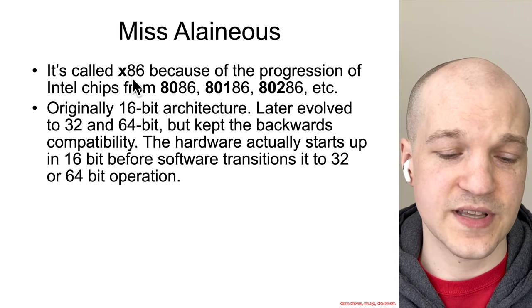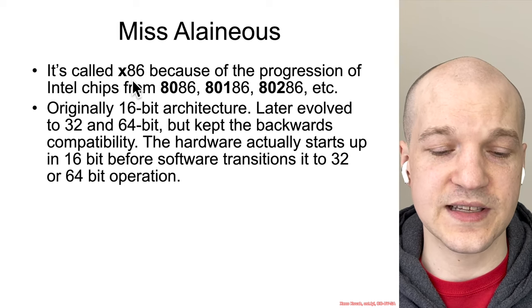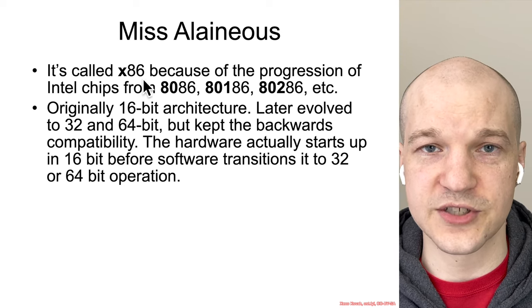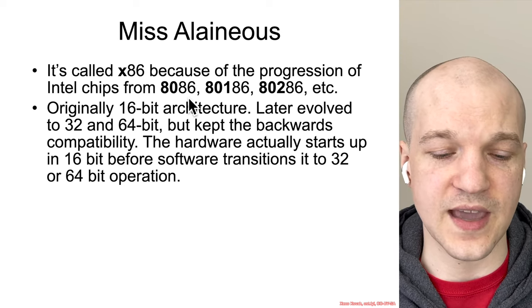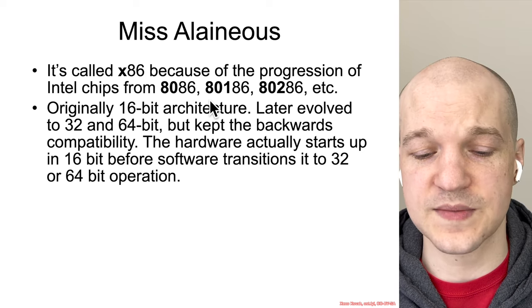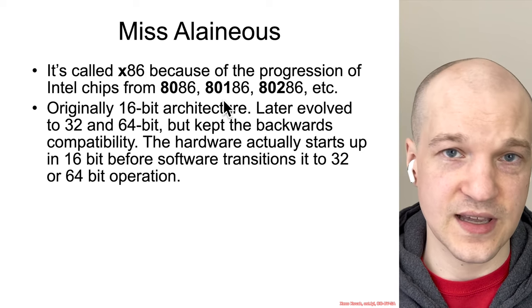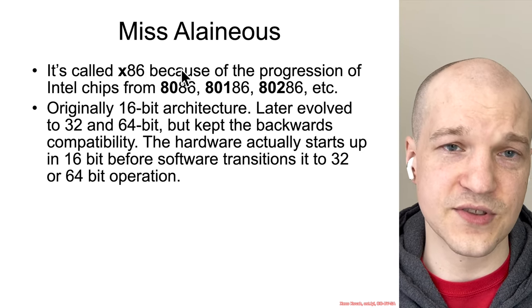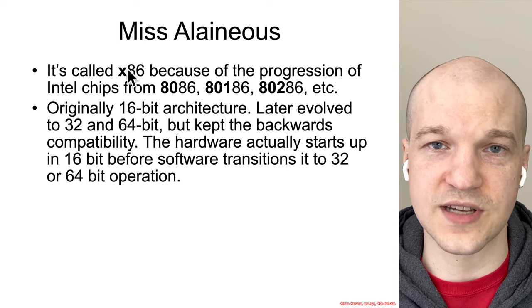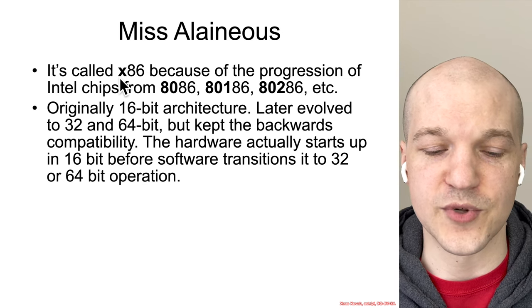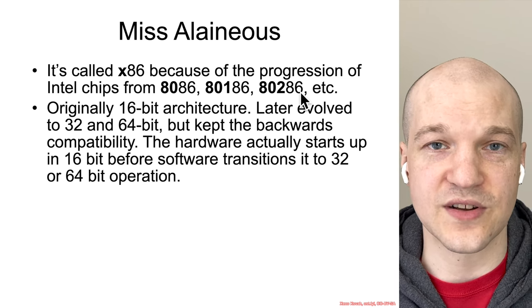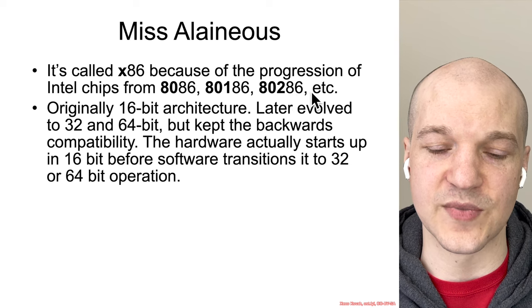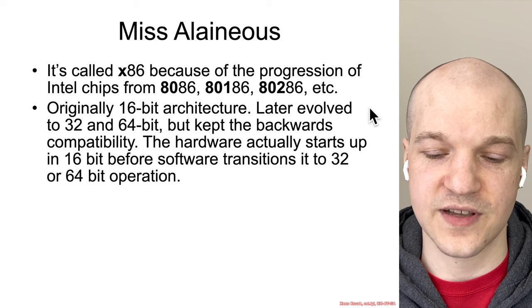So the first thing is: why is it even called x86? Well, that's because the first Intel chips that used this architecture were the 8086, followed by the 8186, 8286, and so forth. So the x is really just a variable that's filling in for these names — they're all just the x86 family of chips.